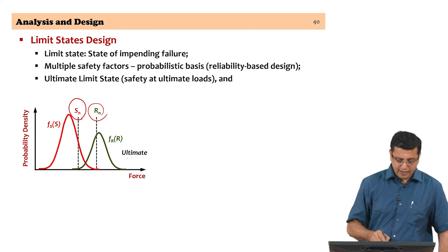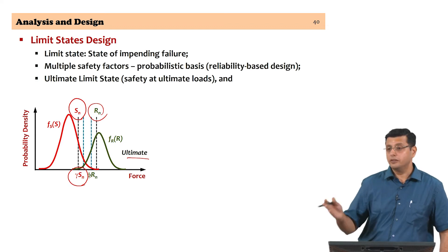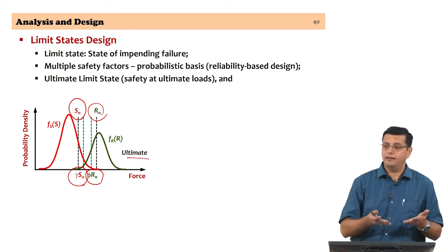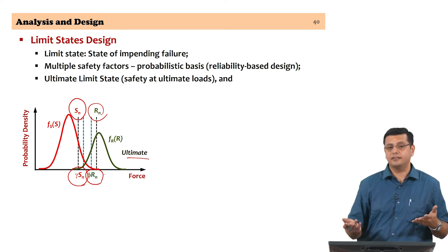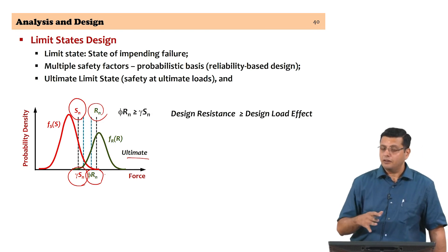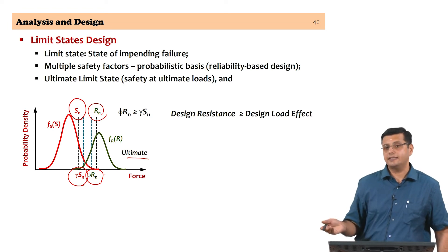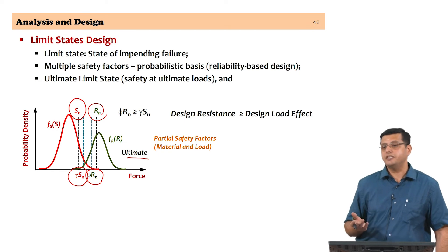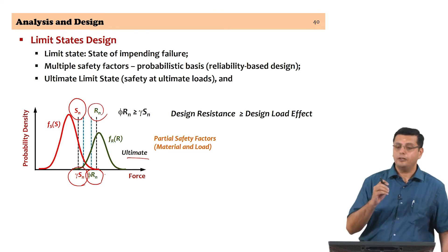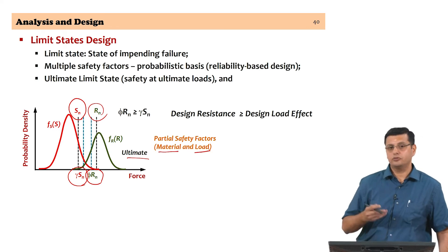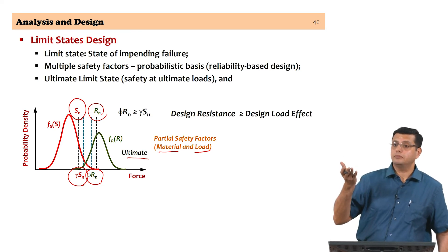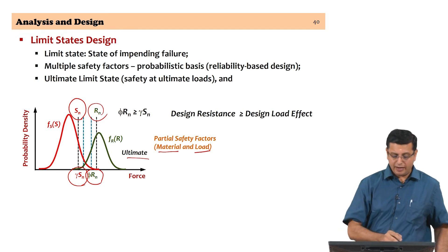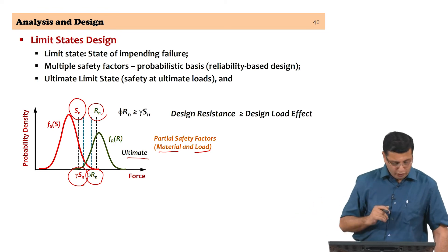A load factor and a resistance factor are used to ensure a sufficient gap between the factored load and the factored resistance. Design becomes a way of ensuring that the design resistance is greater than or equal to the design load effect. This is achieved by partial safety factors applied to both the structural material and the load — loads are increased and strengths are reduced to ensure a margin between design resistance and design load effect.